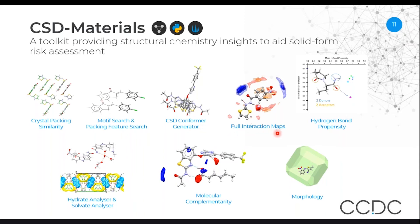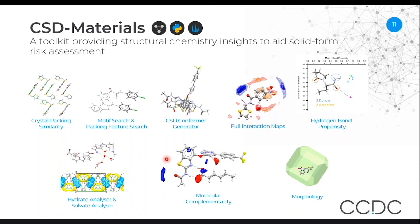We have full interaction maps, which use statistics from the database in order to see where the most likely sites of donor and acceptor atoms in your structure are. We have hydrogen bond propensity, which is one of our most impactful tools in terms of drug solid form risk assessment, used to identify potentially more stable polymorphs.